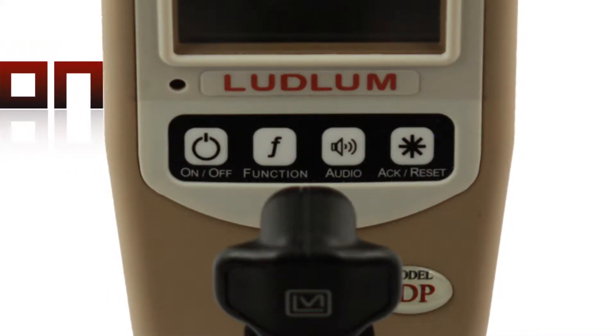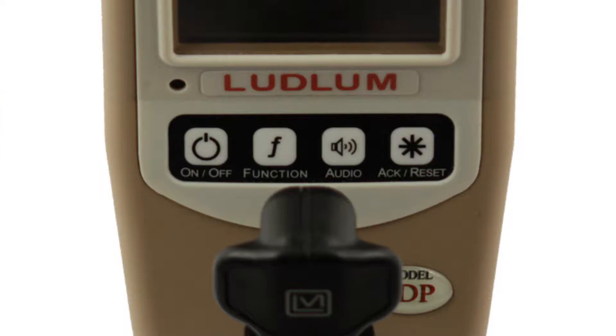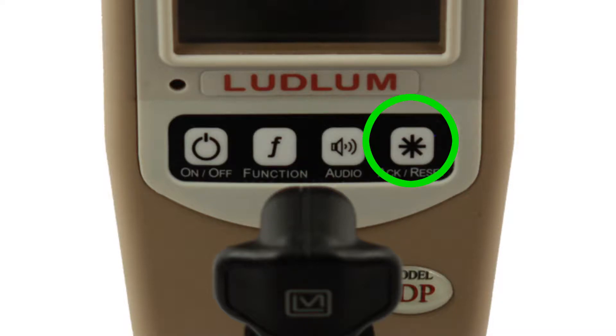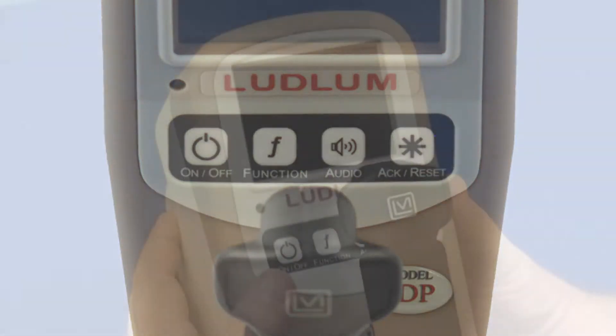The Model 9DP Control Panel consists of four buttons: the On-Off button, the Function button, the Audio button, and the Acknowledge Reset button.